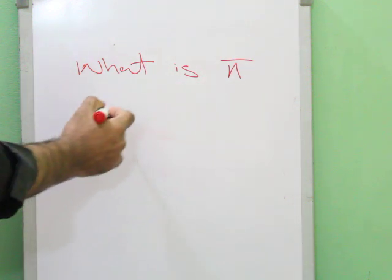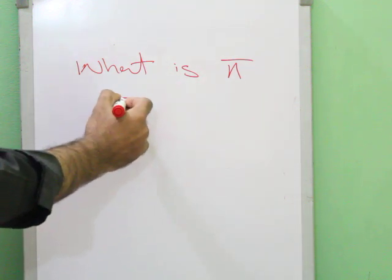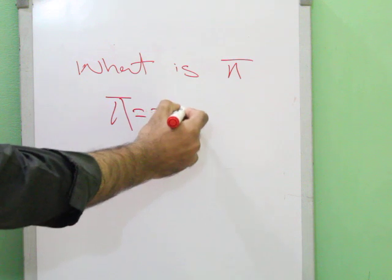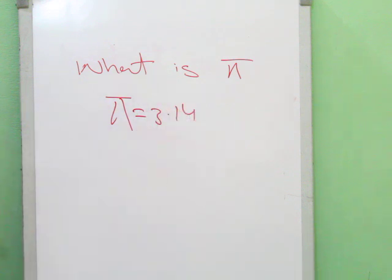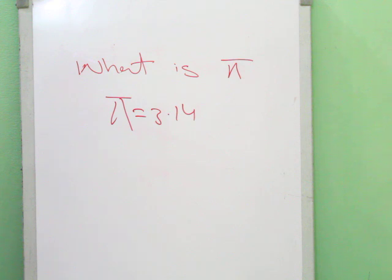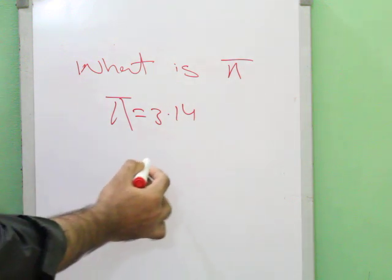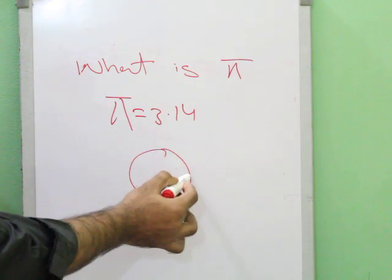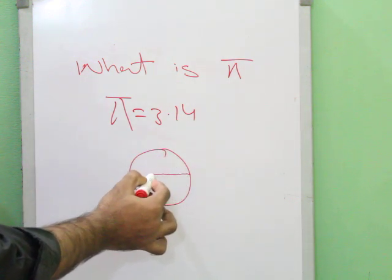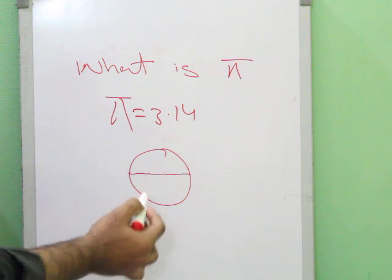The value of pi is 3.14, but why do we take it as 3.14? Today in this video I will try to clear your concept. You know, in this universe, take any circle — let's suppose we take a circle and its diameter.